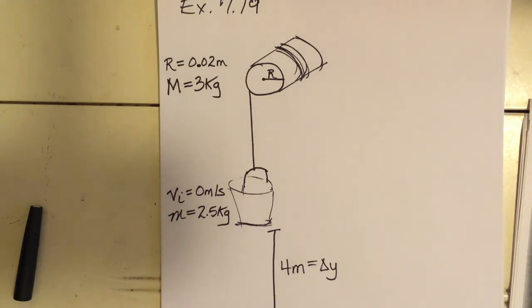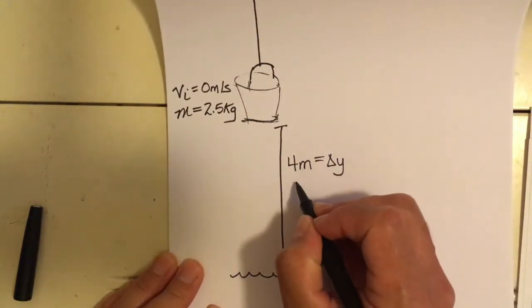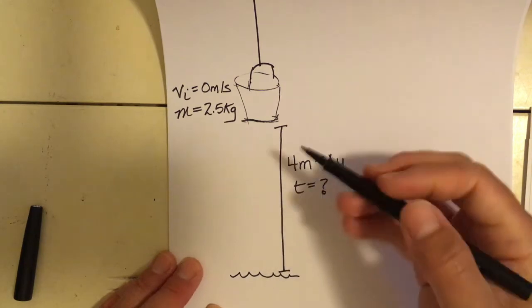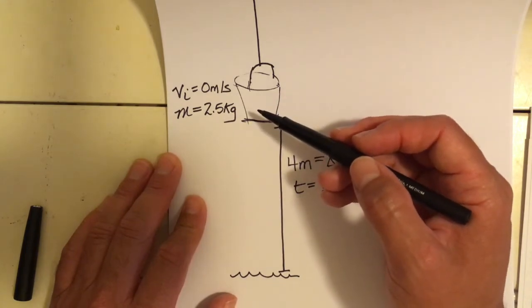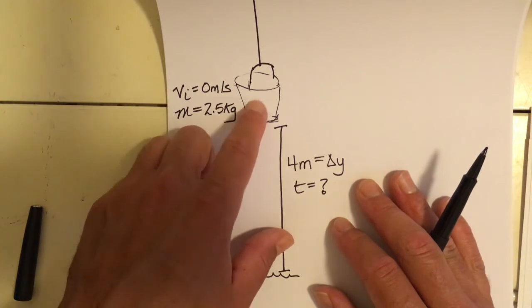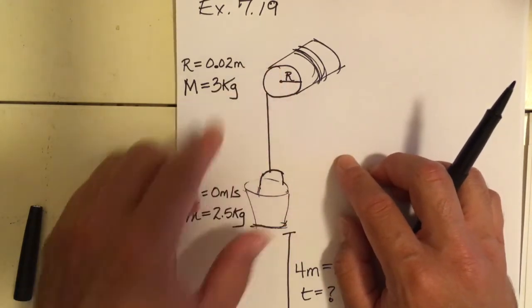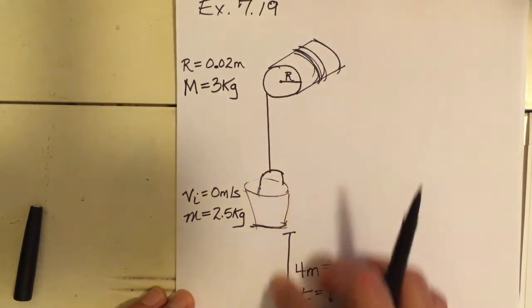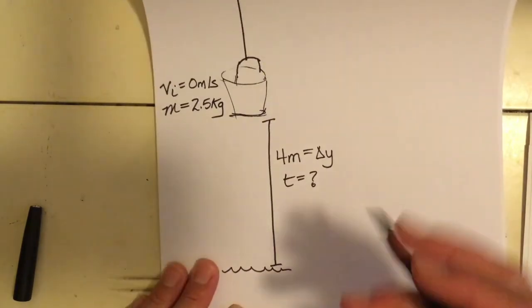The question is: how long does it take the bucket to reach the water? This looks like a kinematics problem, but the bucket won't be in free fall — it'll accelerate slower than 9.81 m/s² because the tension from the cylinder rope slows it down. We need to find the acceleration first.